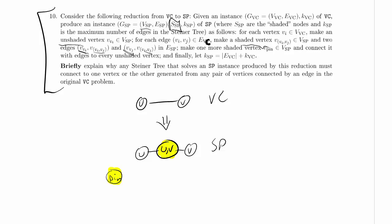So we make that one shaded vertex pin, and we connect pin to every unshaded vertex. So I will connect it to U,